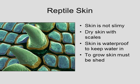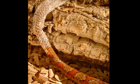Reptile skin is not slimy at all — it is dry and has scales. Their skin is waterproof, and the reason it's waterproof is to keep water in, because many reptiles live in dry environments like deserts. In order to grow, they have to shed their skin. My snake sheds her skin about every six to eight weeks so that as she gets bigger she can continue to grow.